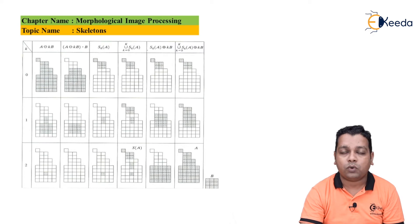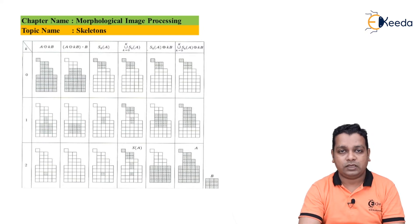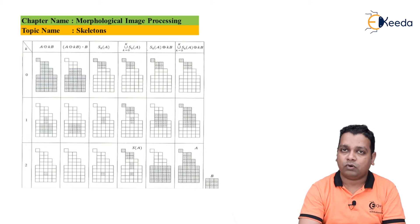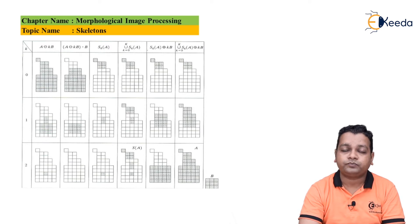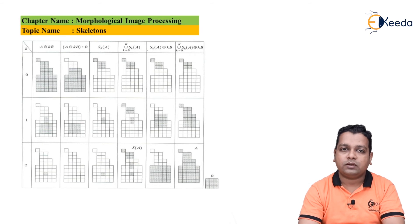Let us use a figure that illustrates this concept in tabular form for k=0, 1, and 2. The first column gives the k values, followed by the successive erosion of A and the opening of the eroded version by structuring element B. The skeleton subsets are shown, and we find the union from k=0 to K, then successive dilation, and finally the union of dilated results to get the skeleton.